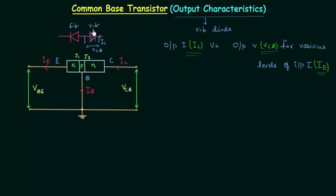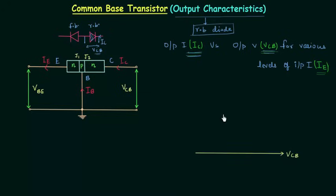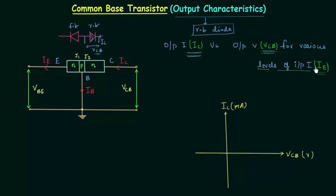This diode is reverse biased. The current is IC and the voltage across the diode is VCB — the same quantities as in the output characteristics. So the output characteristics of the common base transistor is simply the reverse bias characteristics of a PN junction diode. The X-axis represents VCB and the Y-axis represents IC. IC is measured in milliamps and VCB is measured in volts. The important thing is the variation of the plot for different levels of input current IE.